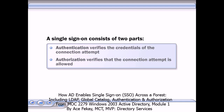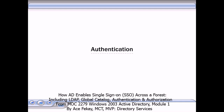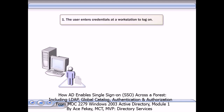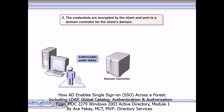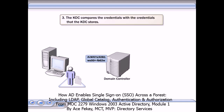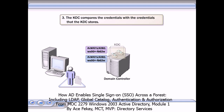Let's look at the authentication and authorization processes. The user enters credentials at a workstation to log on. The client encrypts the credentials and sends them to a domain controller for the client's domain. The KDC, or Key Distribution Center, compares the credentials with the credentials that the KDC stores. If the credentials match, the process continues.